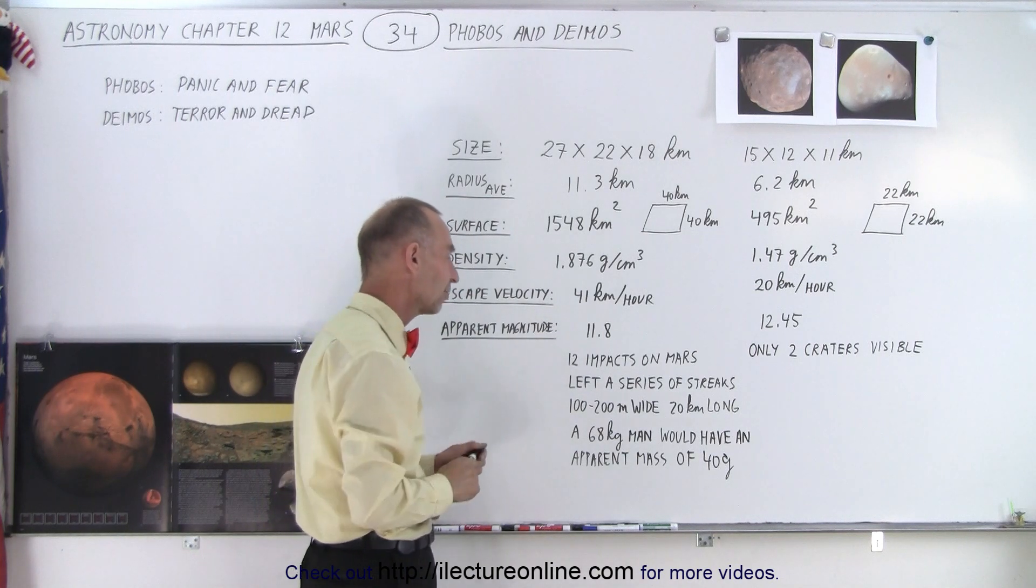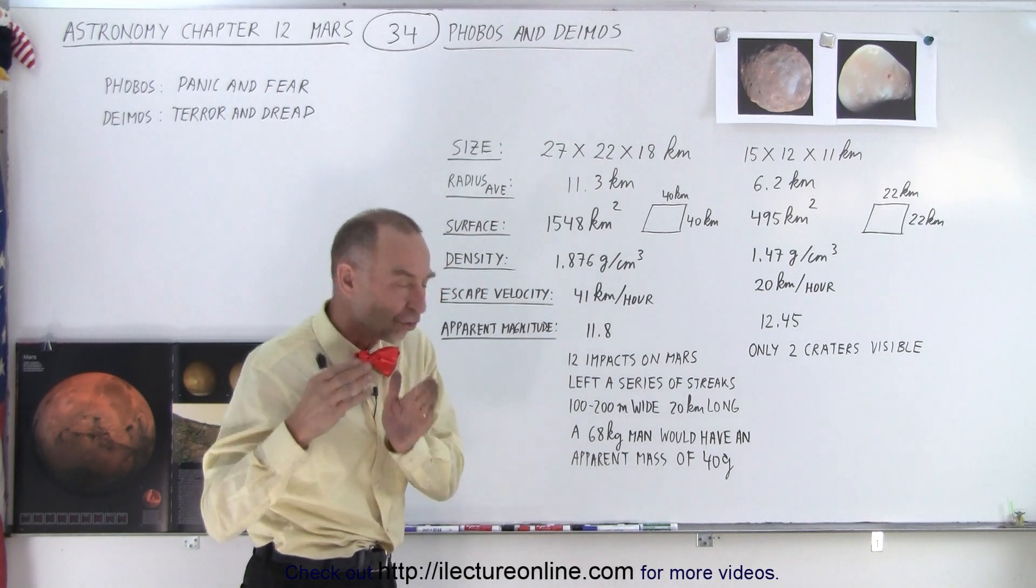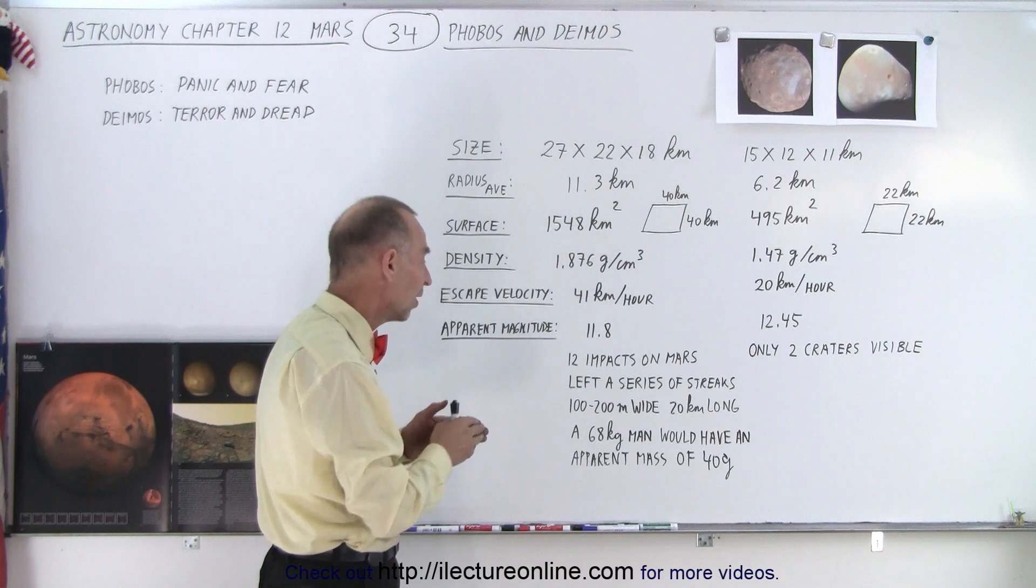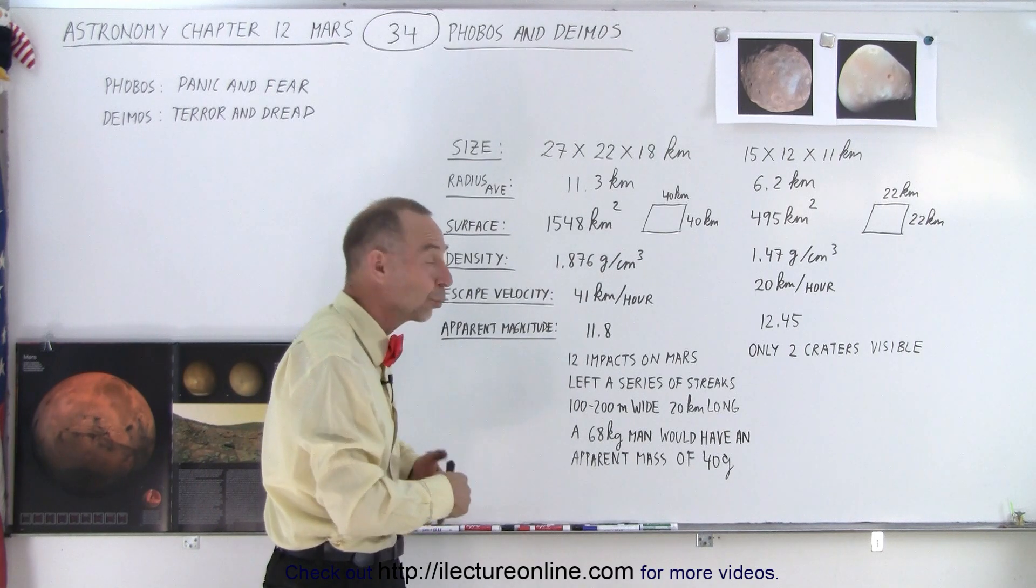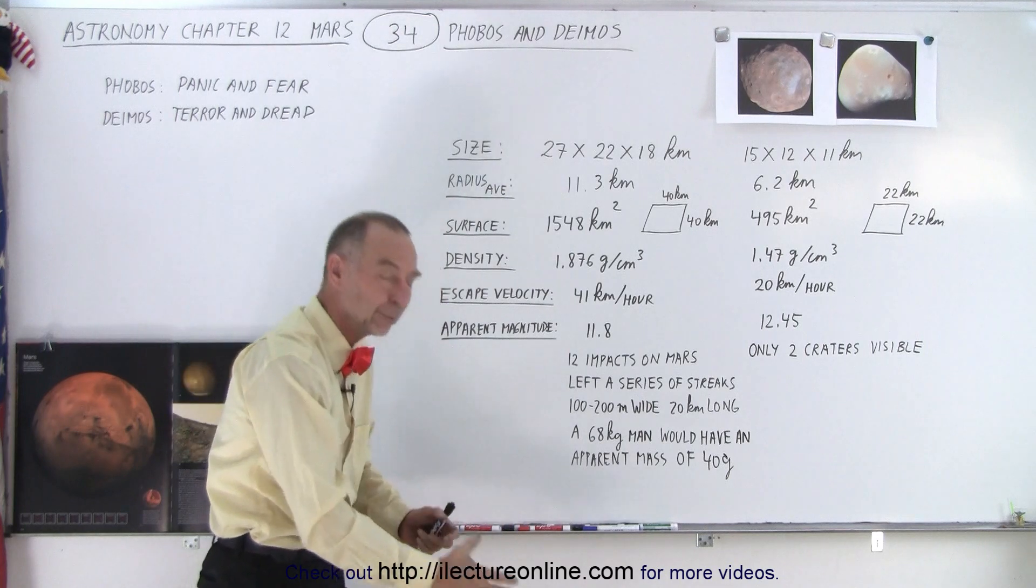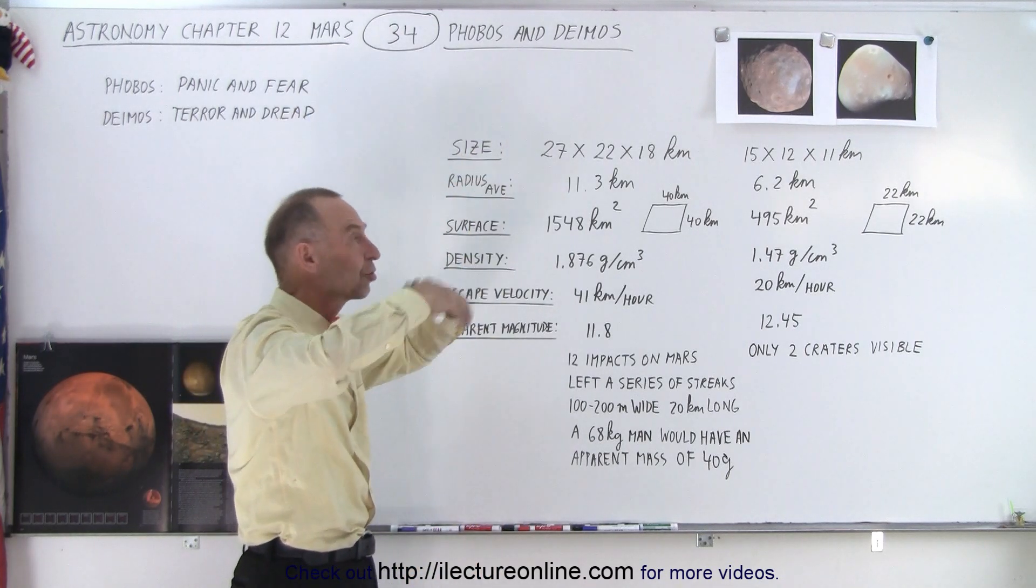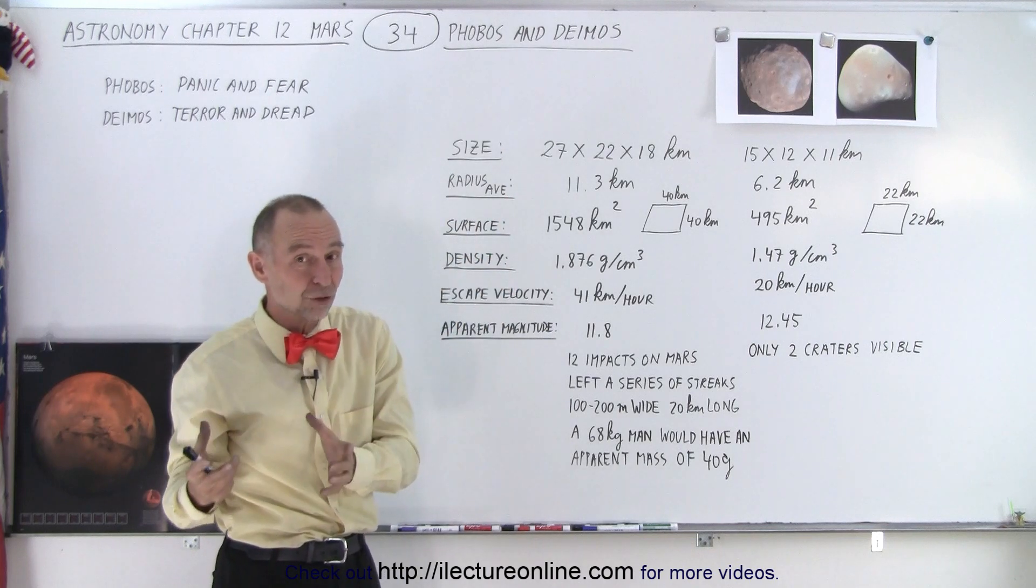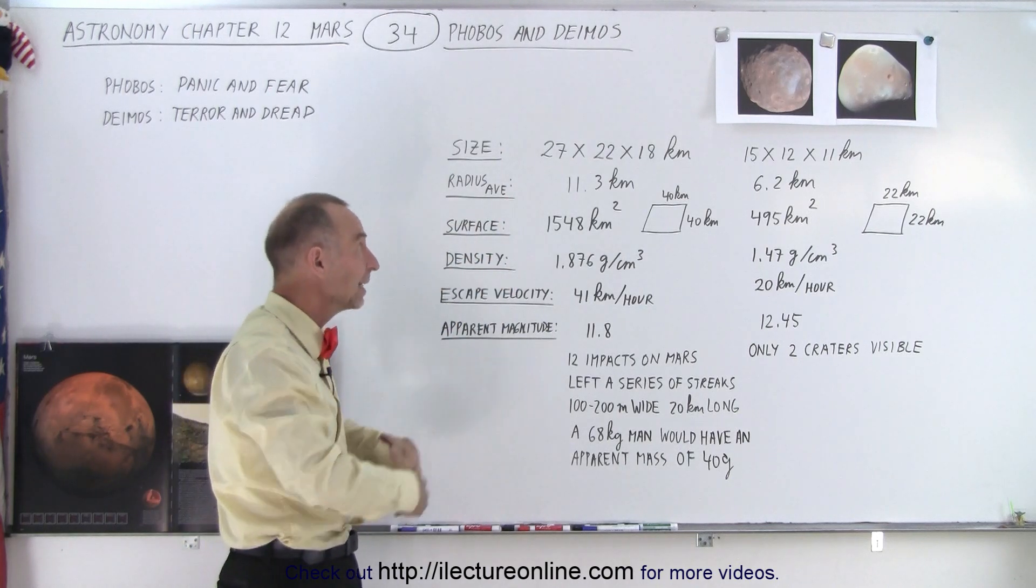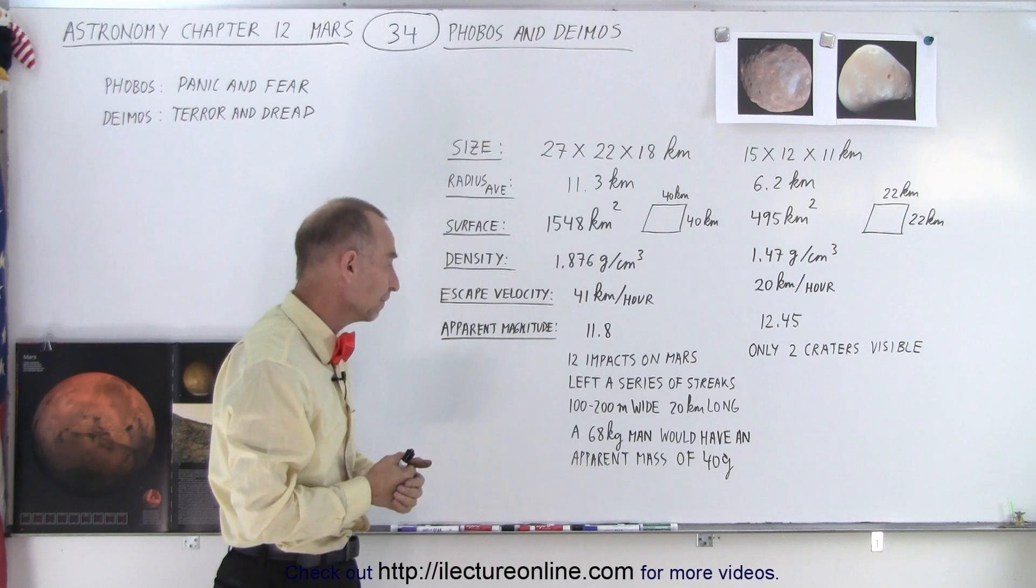Roughly 12 different impacts on Mars left a series of streaks on the surface of Phobos about 100 to 200 meters wide and 20 kilometers long. In other words, a huge impact would hit Mars and then the debris that flies up would then scar Phobos, Phobos being so close to the planet that it can easily reach Phobos and scar up the planet.